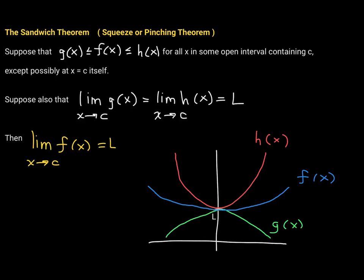In formal language: suppose g(x) ≤ f(x) ≤ h(x) — so f's function values are sandwiched between those of g and h — for all x in some open interval containing c, except possibly at c itself. Suppose also that the limit of g and the limit of h as x approaches c both equal L. Then the limit of f(x) is also L. This theorem is going to be very important for us, helping us find a wide range of different kinds of limits.